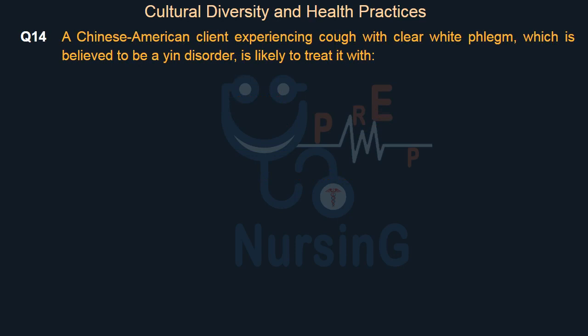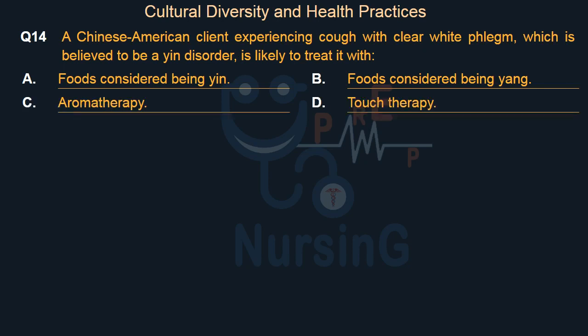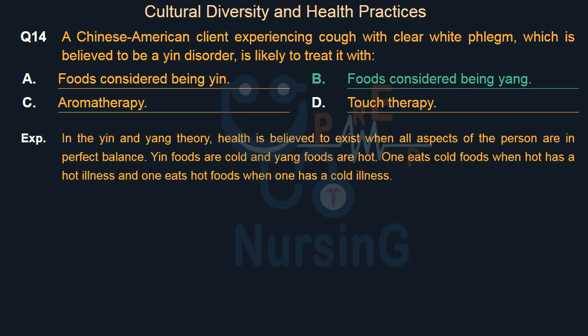A Chinese-American client experiencing a cough with clear white phlegm, believed to be a yin disorder, is likely to treat it with: Option A: Foods considered to be yin. Option B: Foods considered to be yang. Option C: Aromatherapy. Option D: Touch therapy. The right answer is Option B — Foods considered to be yang. In yin and yang theory, health exists when all aspects of a person are in perfect balance. Yin foods are cold and yang foods are hot. One eats hot foods when one has a cold illness.